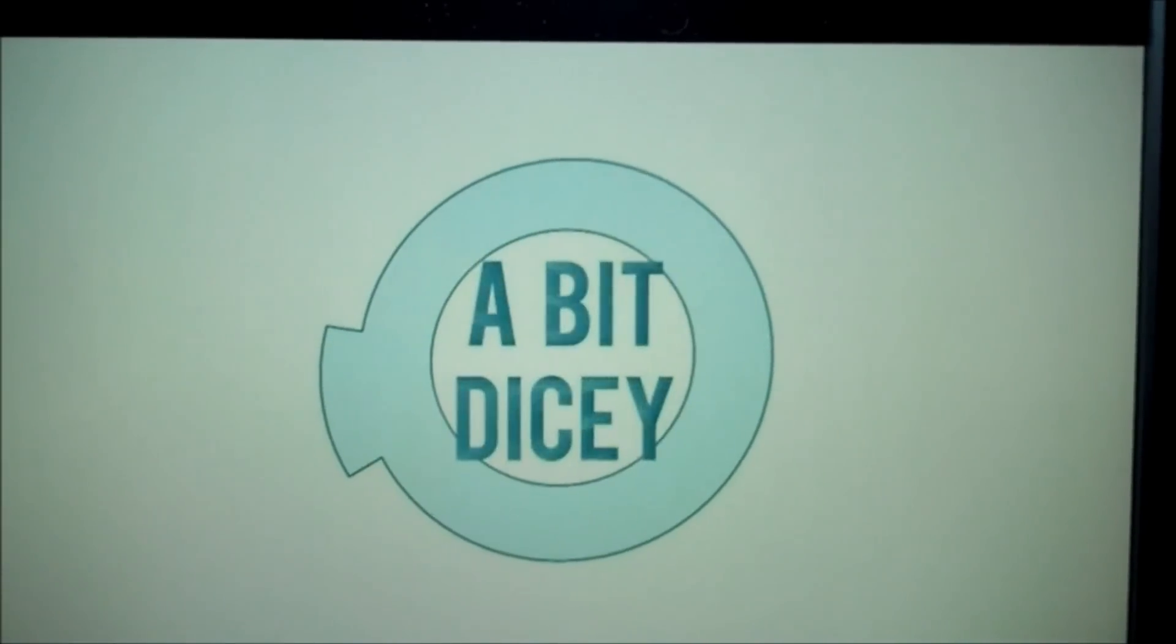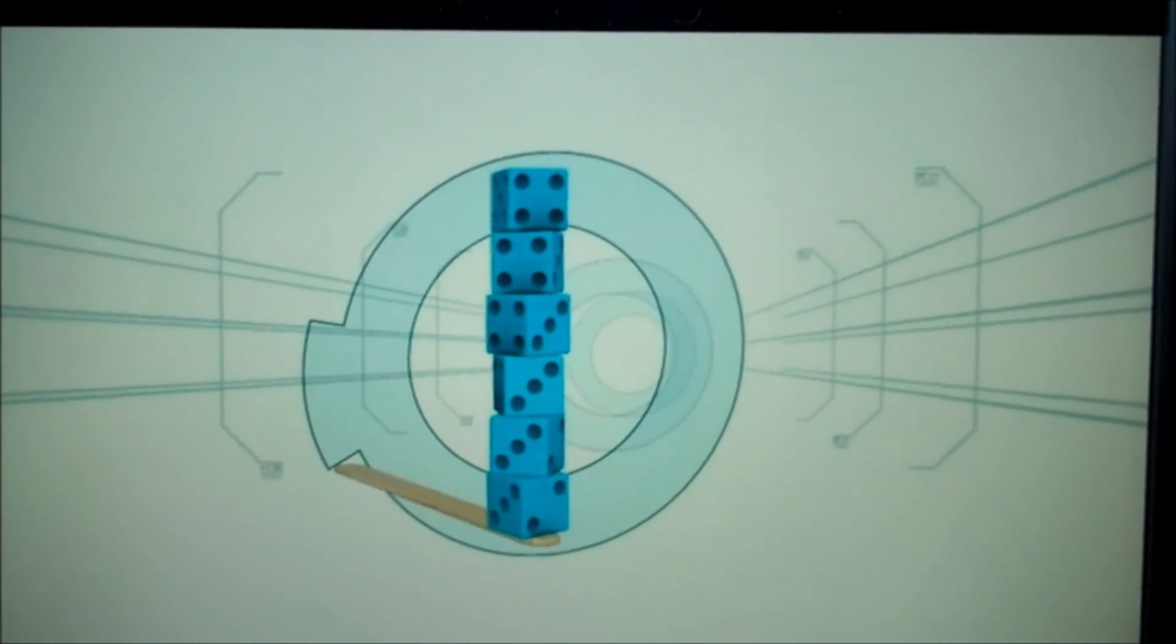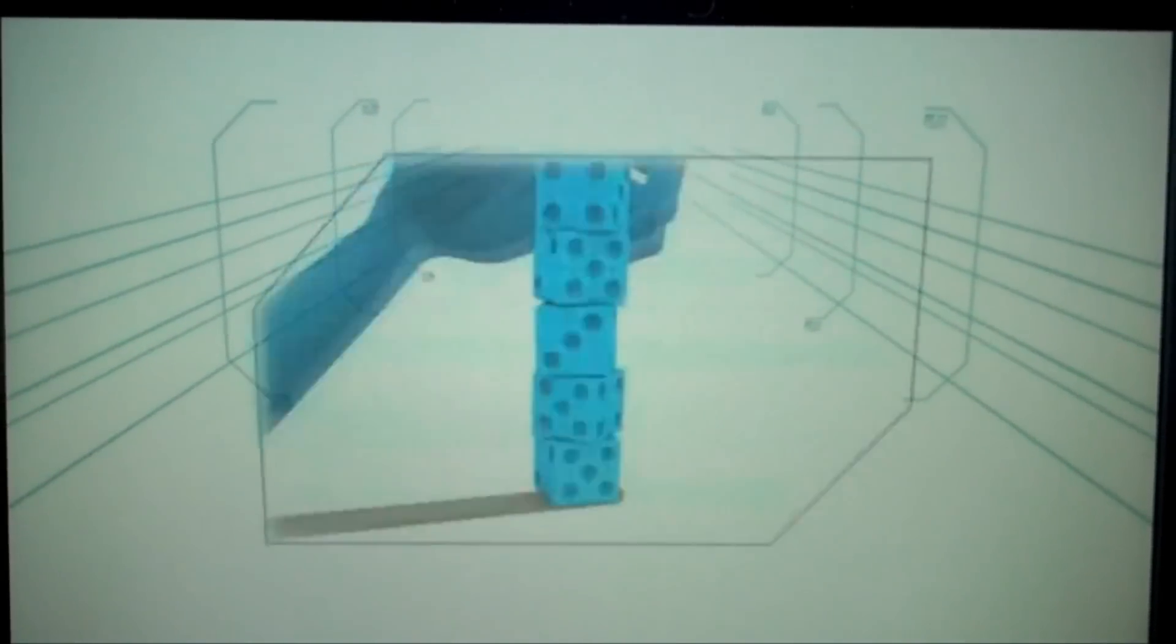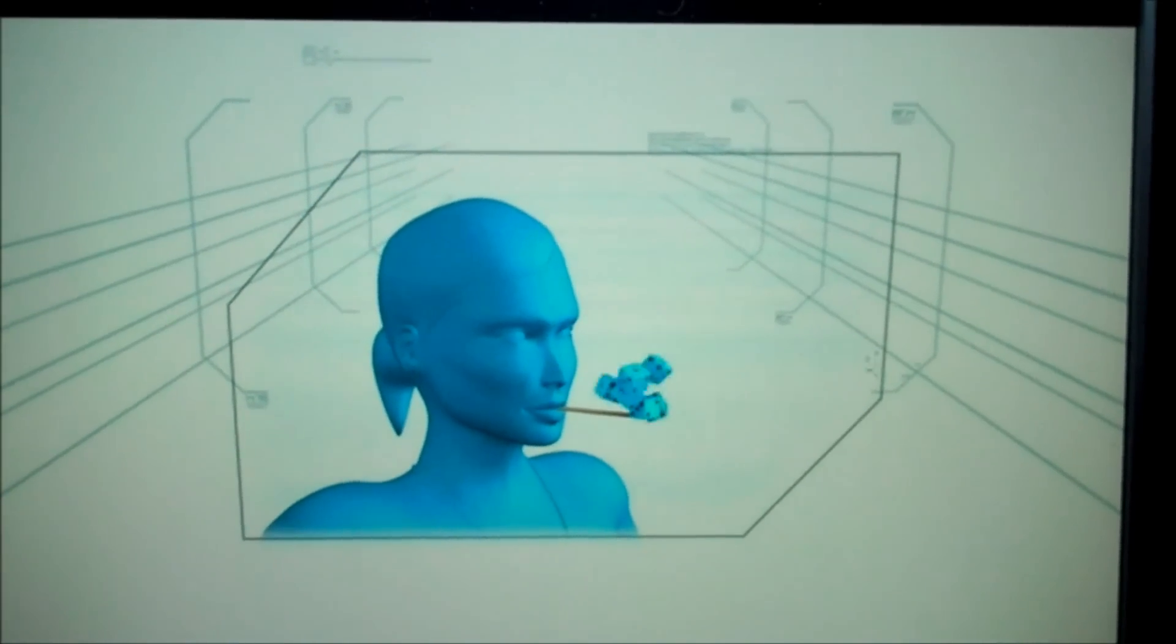A Bit Fancy. Stacking six dice can be difficult. Balancing them atop a popsicle stick is even harder. Building a dice tower on a popsicle stick held in your mouth, now that's a Minute to Win It challenge.